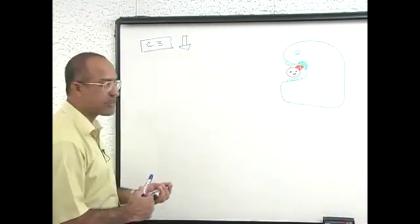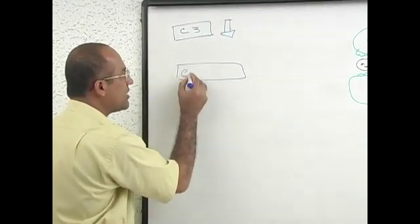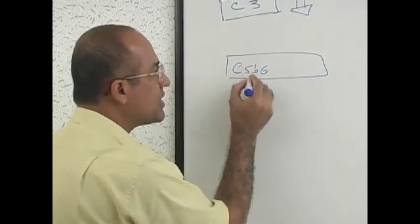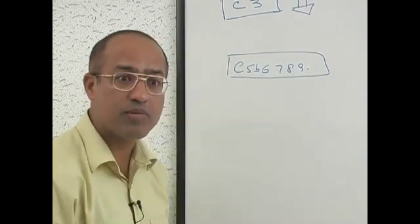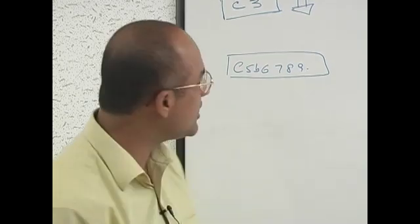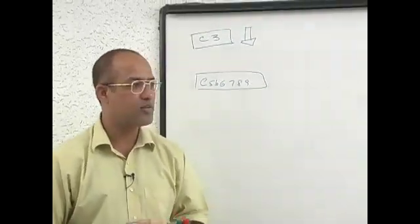Then this is about the initial factors. If you have deficiency of terminal factors, terminal factors mean C5, 6, 7, 8, 9. It means you are not able to make membrane attack complex. So if any one of these is deficient or multiple of them are deficient.